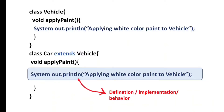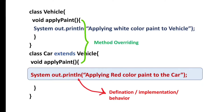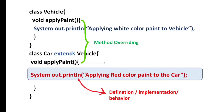For example, we create a parent Vehicle class with an apply_paint method that applies white color paint to the vehicle, and a child Car class. The child class inherits the apply_paint method, but we change its definition to apply red color paint to the car. Here, the parent class method definition is applying white color paint and the child class method definition is applying red color paint — we have redefined the parent class method in the child class. This is method overriding. The child class method is called the overriding method, and the parent class method is called the overridden method.